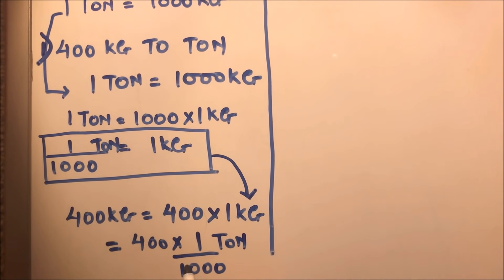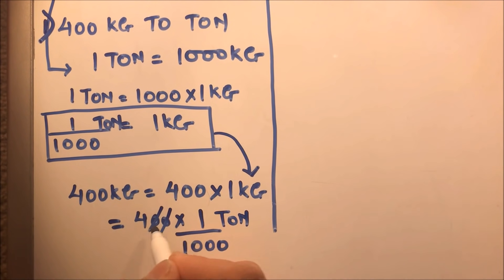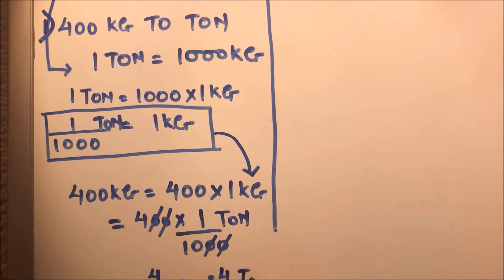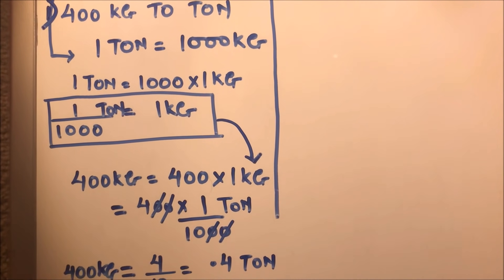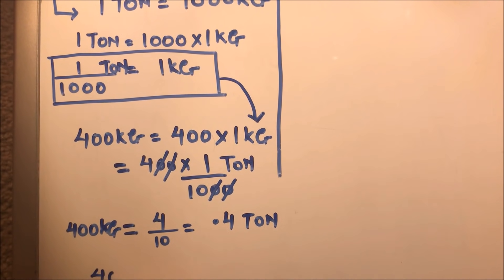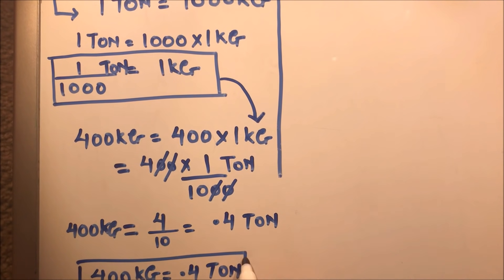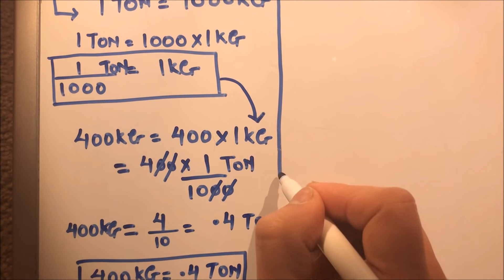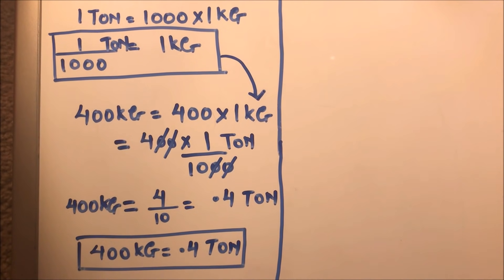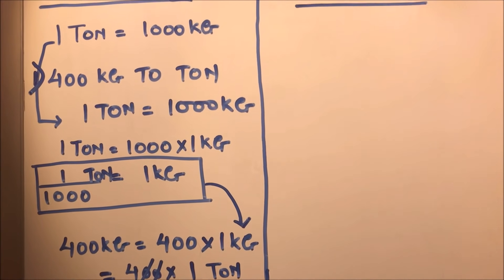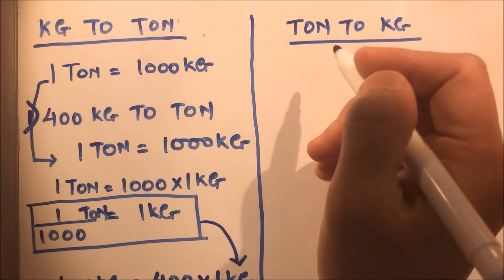Now the zeros will get cancelled, and this will be four over ten, which is equal to 0.4 ton. So four hundred kilograms will be equal to 0.4 ton. In this way we can convert kilograms to tons. Now let's suppose we need to convert tons to kilograms.